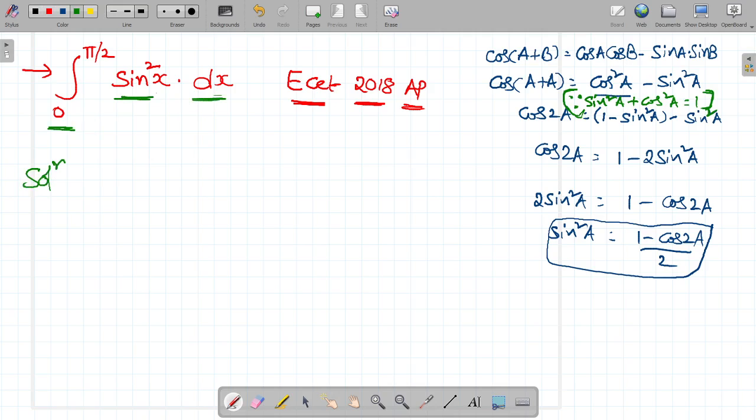Let us go for the solution. Integral 0 to pi by 2 sin square x dx. We cannot directly integrate the sin square x. So, it can be written in cos power 1x or sin power 1x terms. Convert into cos power 1x or sin power 1x.